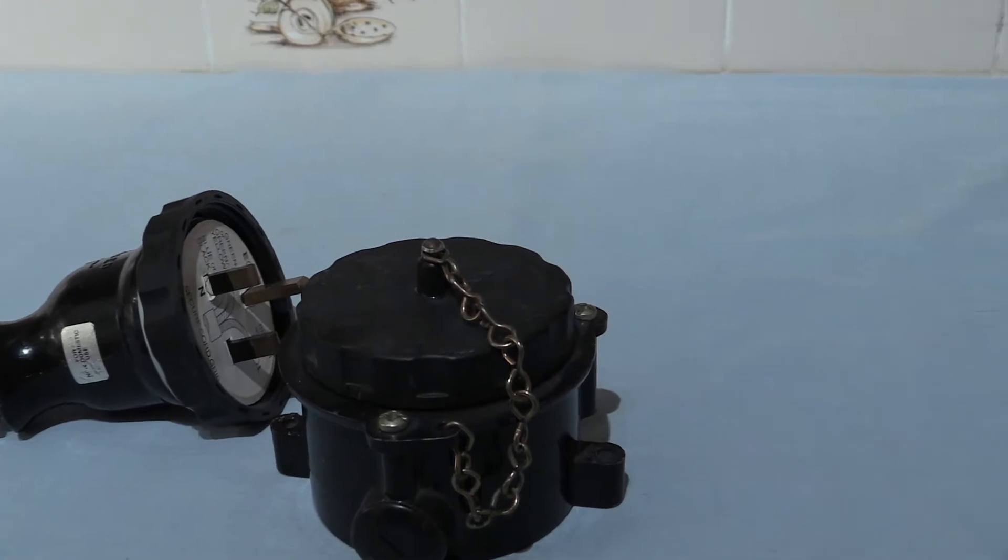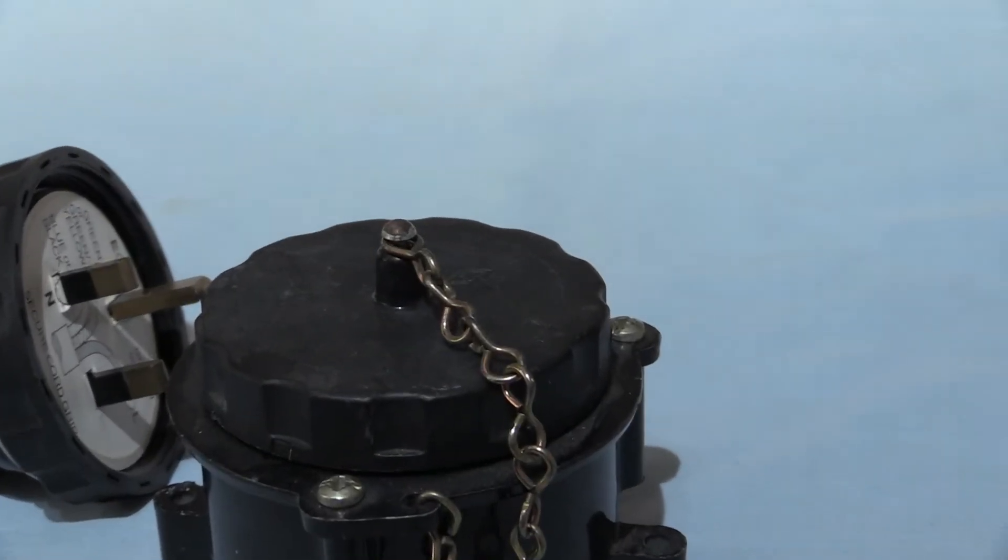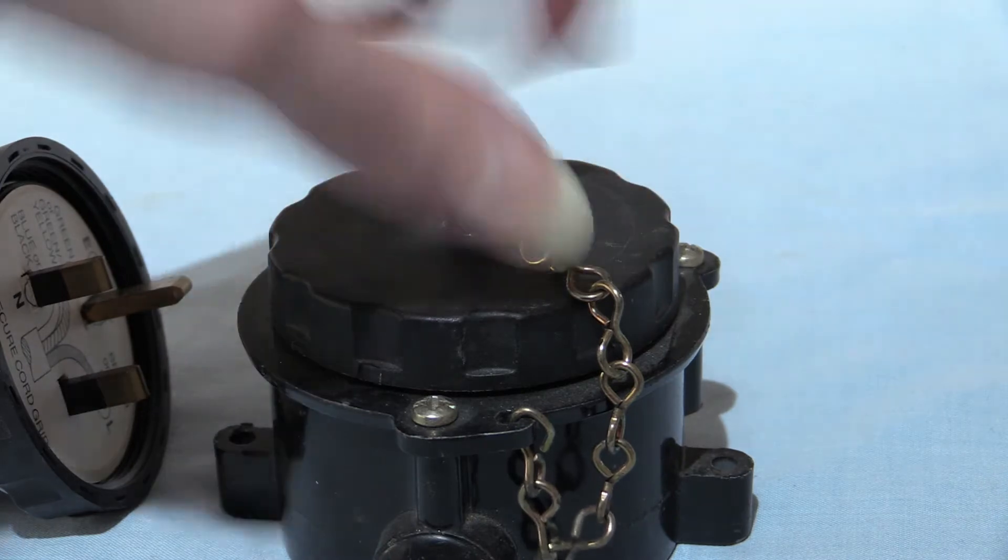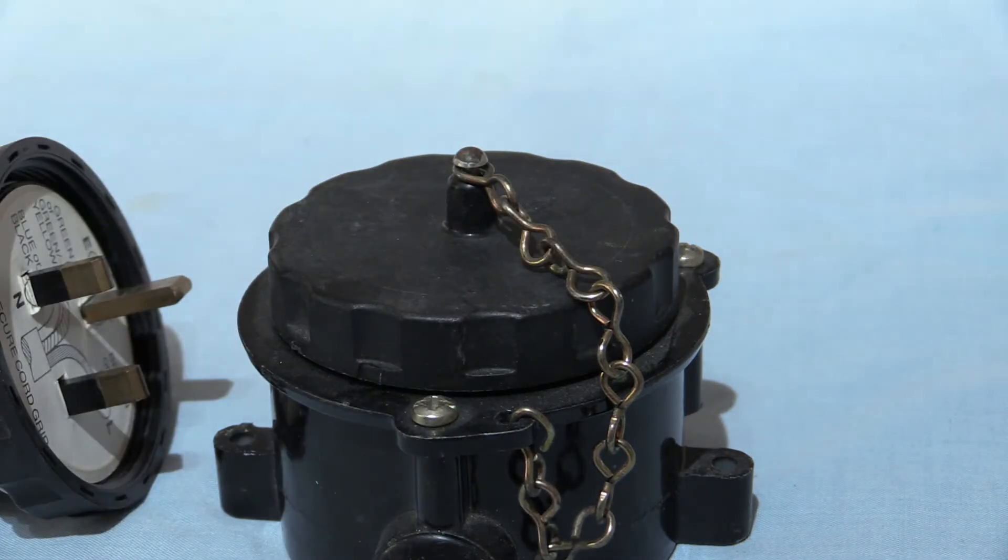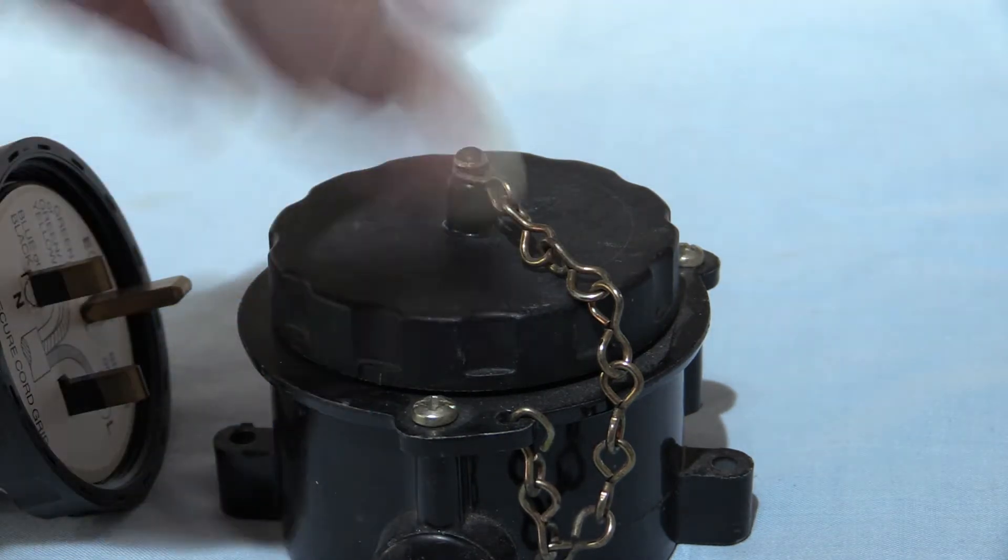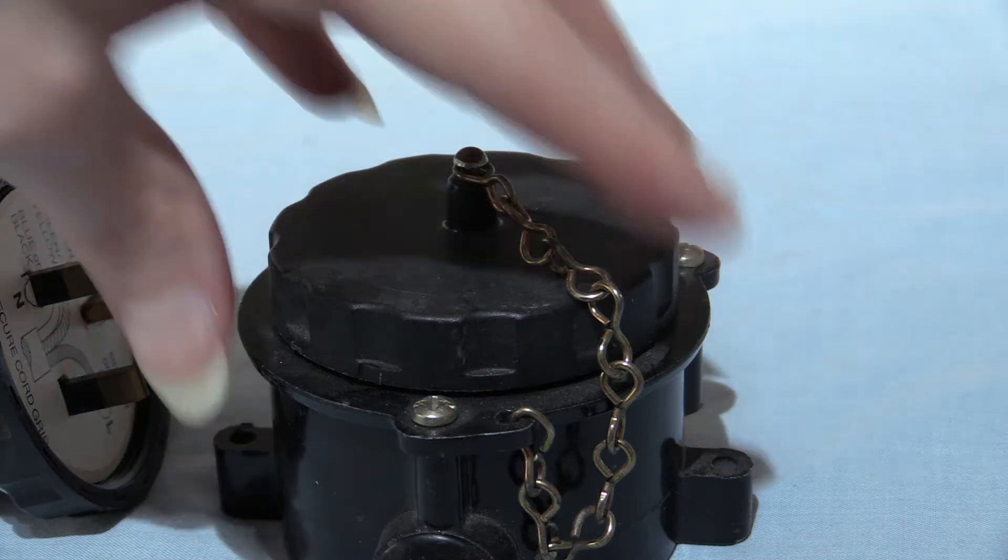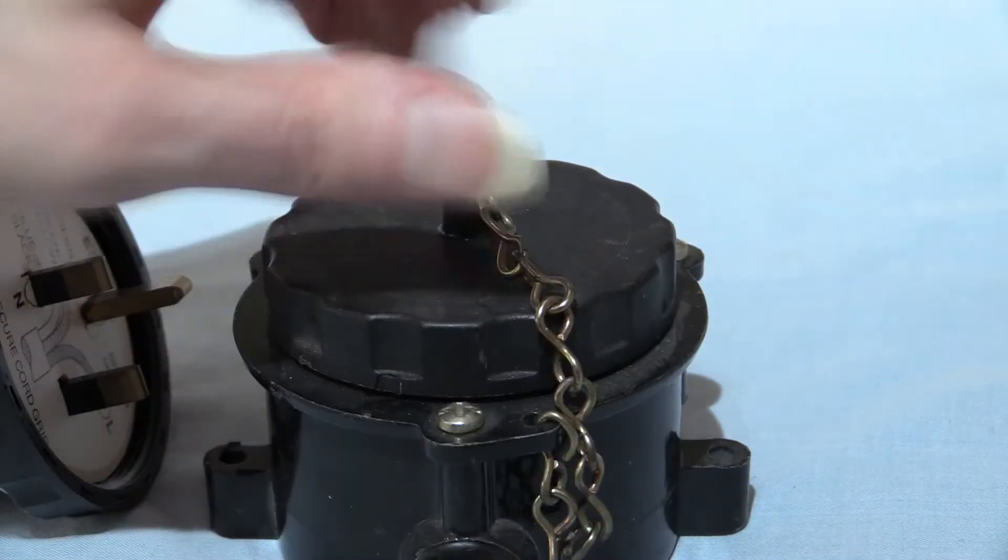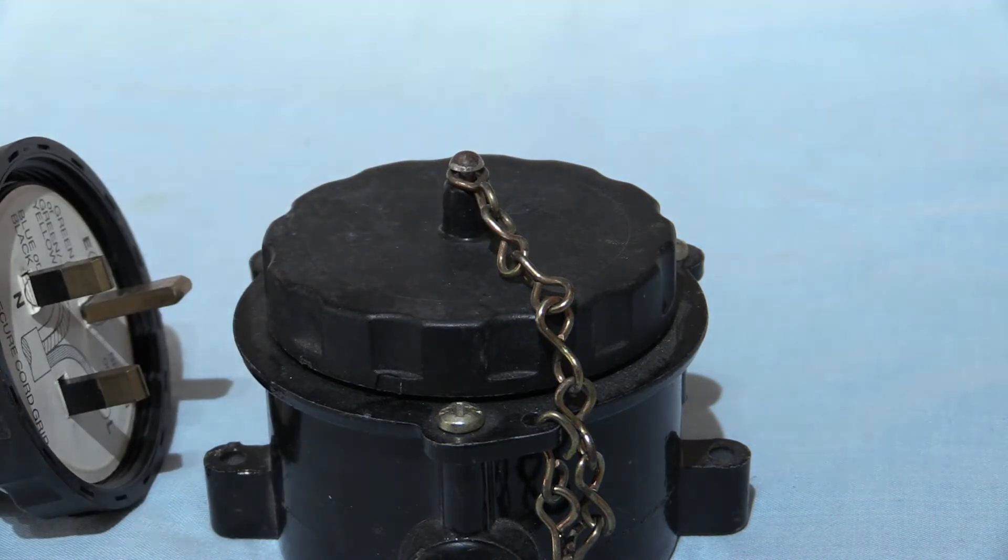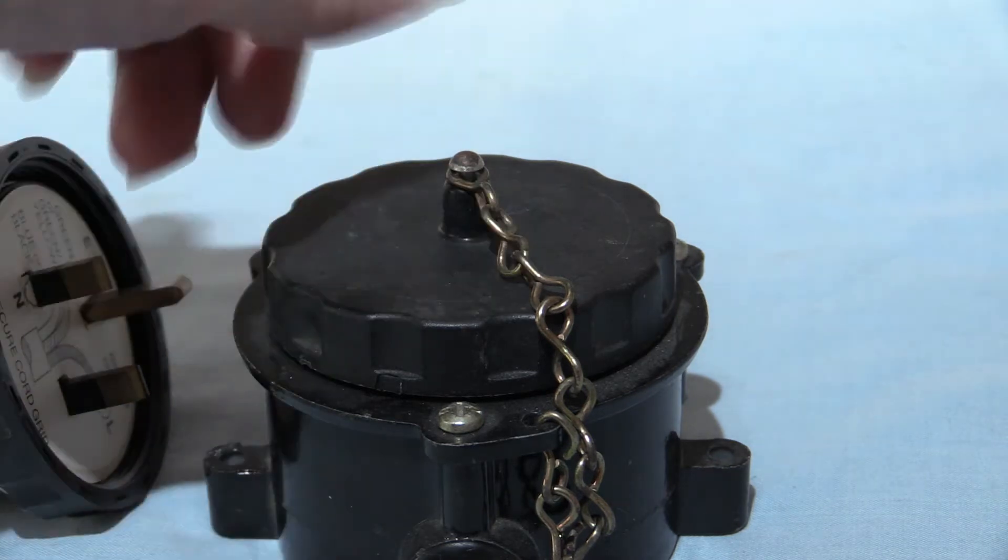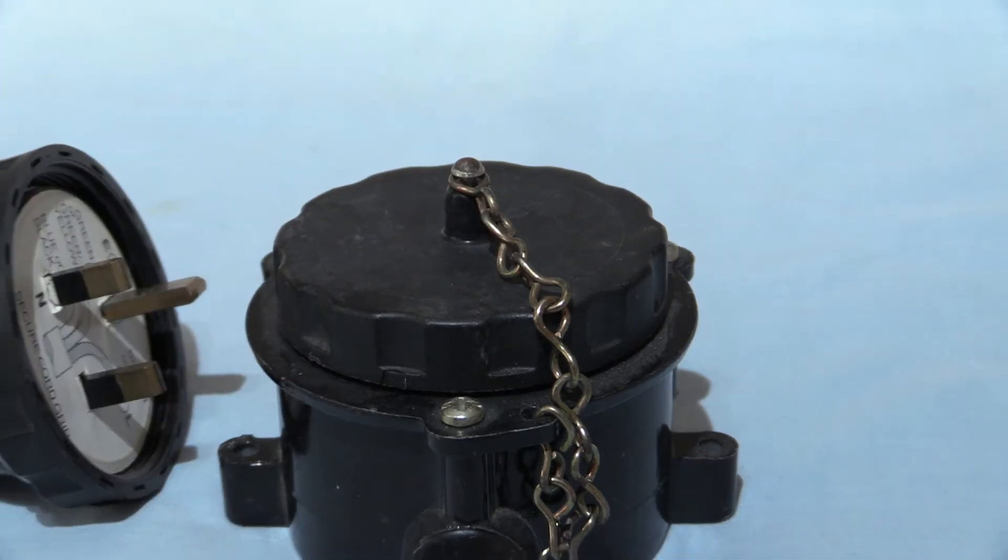The cap goes missing, or worse still, someone unscrews it and then yanks the chain, and steals the cap. Flipping mindless vandals basically. But with the new ones, it's fixed on there and it just lifts up, rather much like the British Standard 4343 sort of arrangement with the lift up flap cover.